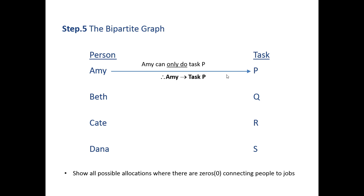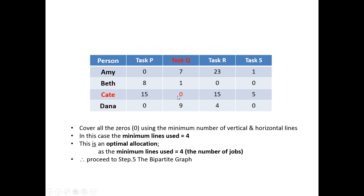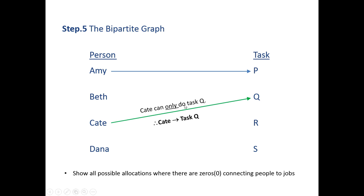Remembering that each person must have one job. Kate only has one zero, so she can only complete task Q. So Kate can only do task Q, so she's allocated task Q.